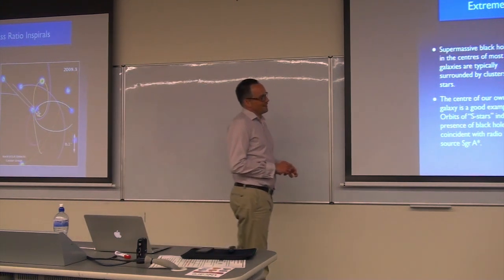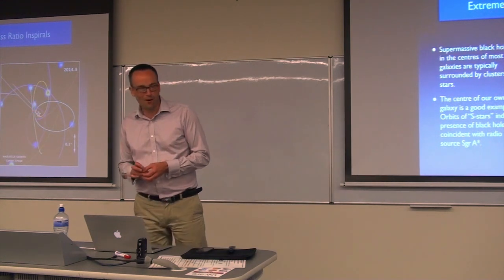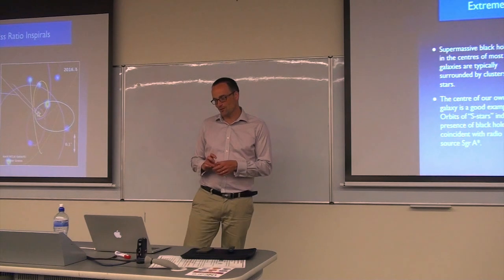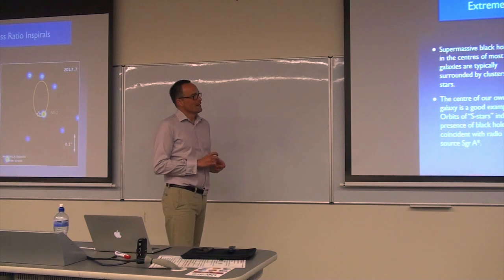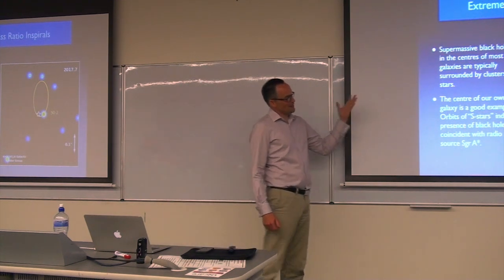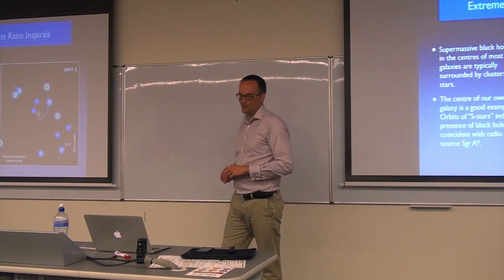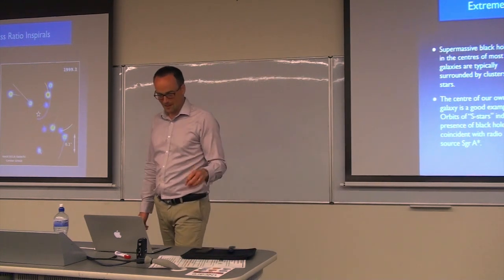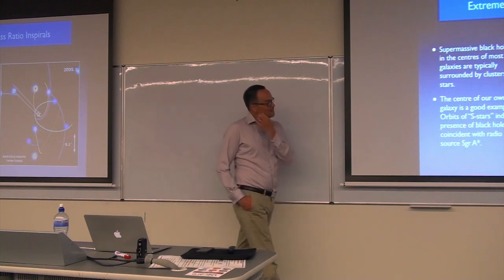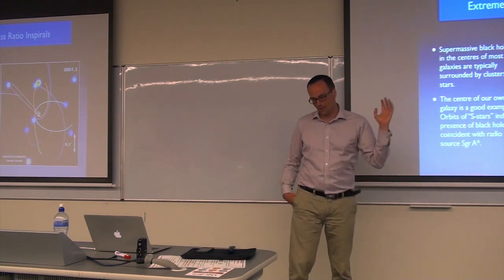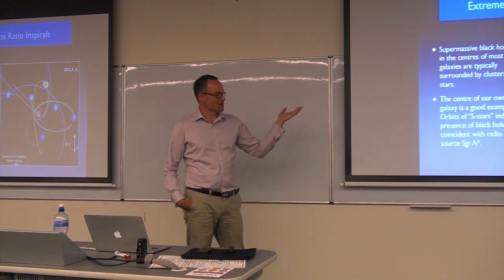The last category of compact binary coalescence I want to talk about are extreme mass ratio inspirals, a topic close to my heart that I've worked on for quite a while. It's another type of binary in which you have a stellar-origin remnant falling into a supermassive black hole in the centre of a galaxy. We expect these things to occur because in the centres of most galaxies there are clusters of stars surrounding a dense object, which is most likely a black hole.